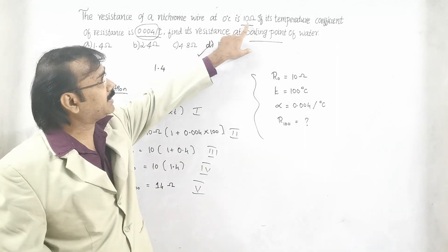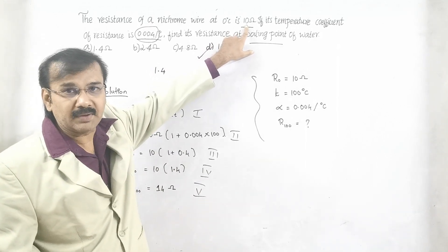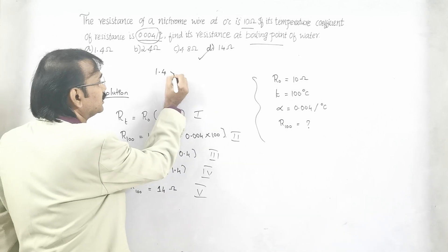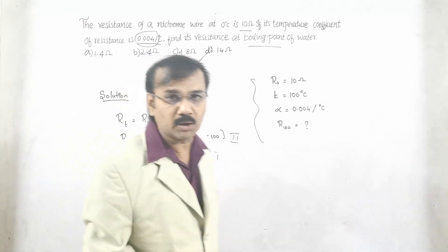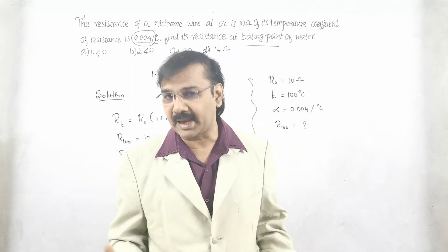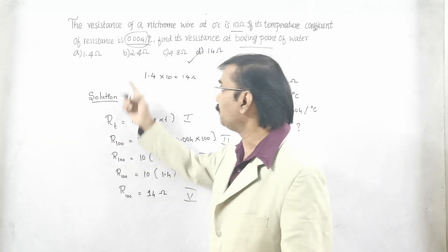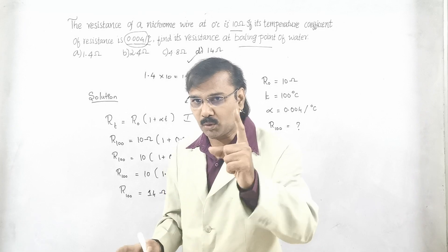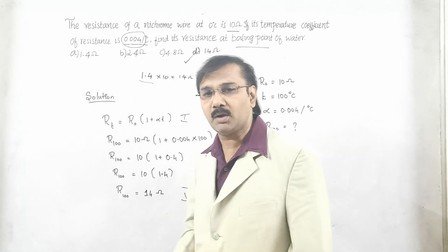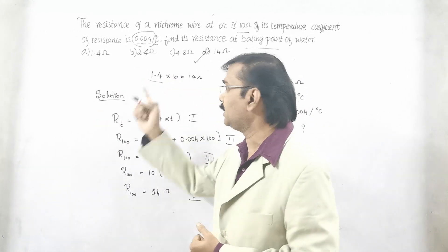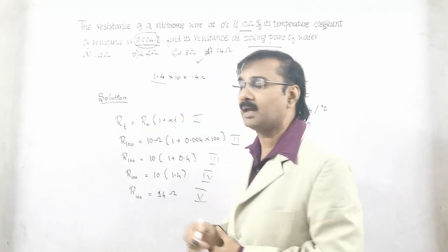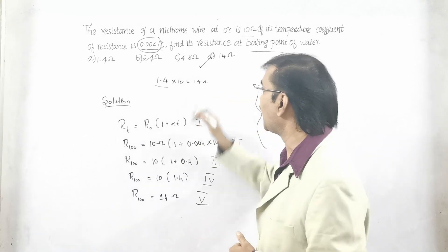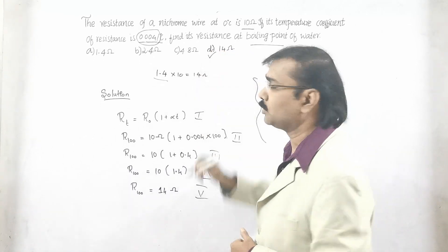I am going to write here 1.4. Then see the number given here straight, it has been given as 10. Multiply with 10. We get straight away 14 ohms. With a single step we got this answer. What is the method? Again you want to repeat. If it is 0.004, we have to take it as 1.4. Write 1.4 or keep in your mind 1.4. Then multiply with the given resistance, the other number is 10. If you multiply, it is 14 ohms. That is our answer, 14 ohms.